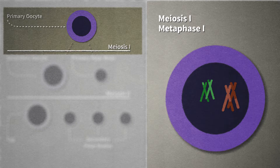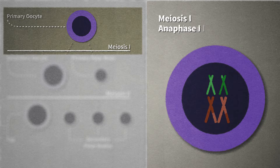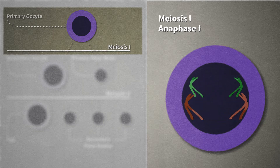In metaphase I, the paired chromosomes line up along the cell's equatorial plane. Pairs of homologous chromosomes line up randomly with either member of the pair oriented to one pole or the other. The pairs also orient randomly relative to other pairs, in the process of independent assortment. In anaphase I, the chromosomes in each homologous pair are separated from each other and pulled to opposite poles.